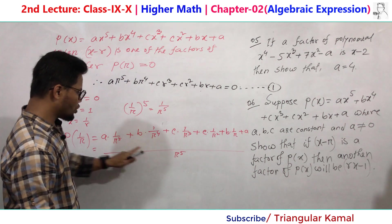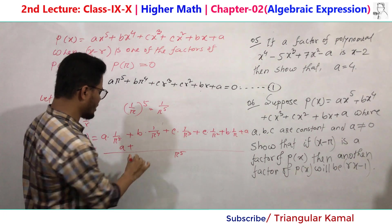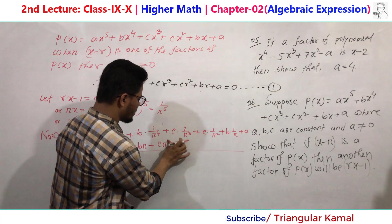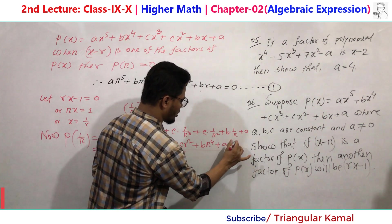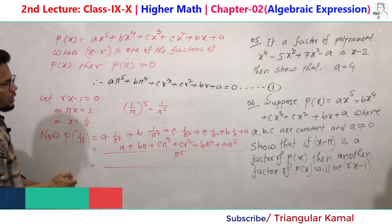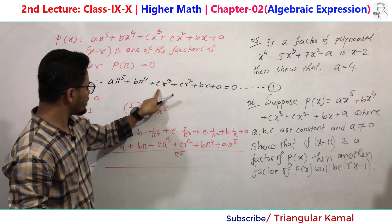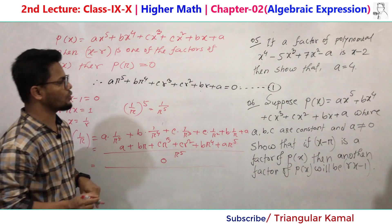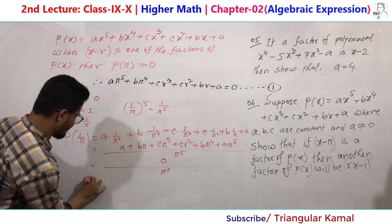After multiplying through by r to the power 5, the numerator becomes: a plus br plus cr squared plus cr cubed plus br to the power 4 plus ar to the power 5, all divided by r to the power 5. Using equation number 1, we recognize that the numerator ar^5 plus br^4 plus cr^3 plus cr^2 plus br plus a equals zero. Therefore the whole expression equals zero divided by r to the power 5, which equals zero.